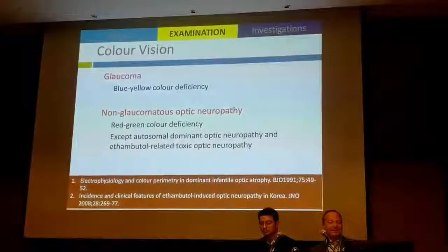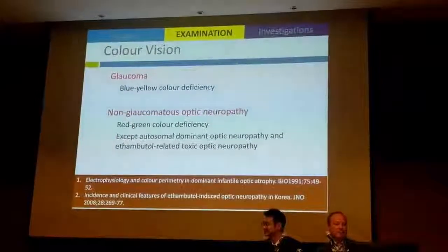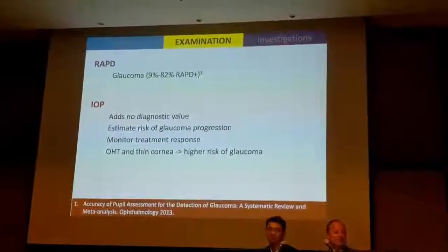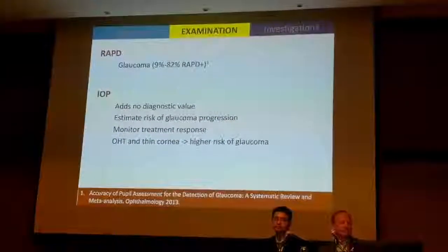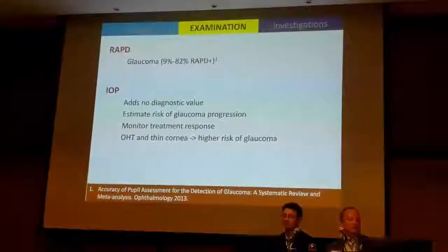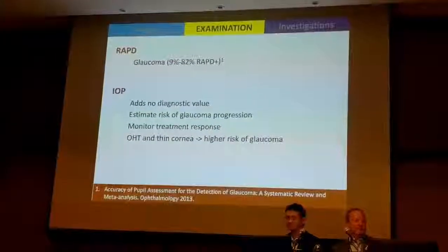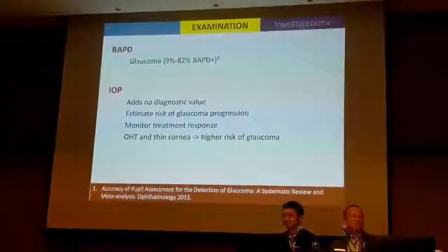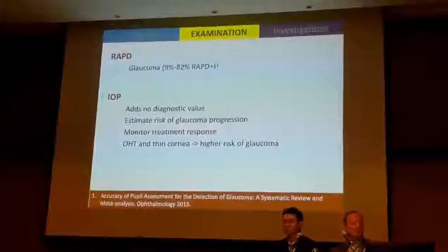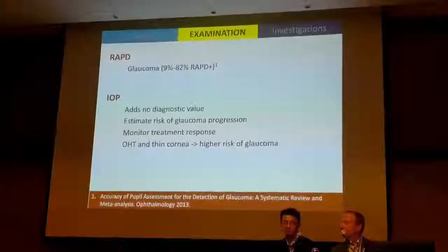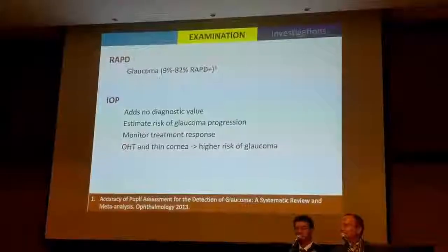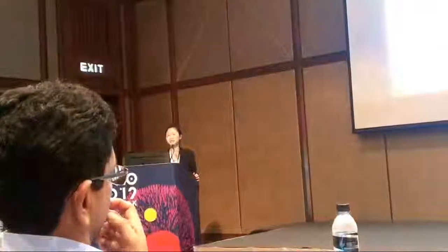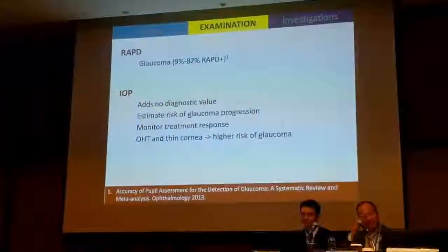Whereas glaucoma, autosomal dominant optic atrophy, and ethambutol-related toxic neuropathy present with blue-yellow colour deficiency — but when was the last time you checked colour vision on a glaucoma patient? Regarding RAPD, studies have shown that in glaucoma, because of its asymmetric presentation, 9 to 82% of patients do have an RAPD, so that doesn't help much. Intraocular pressure adds no diagnostic value; it's merely a risk factor for glaucoma progression and allows monitoring of treatment response, but we need to be aware of ocular hypertension and thin corneas.